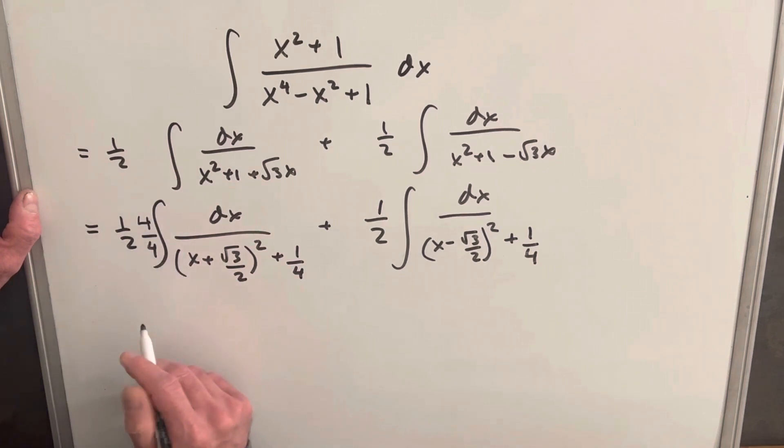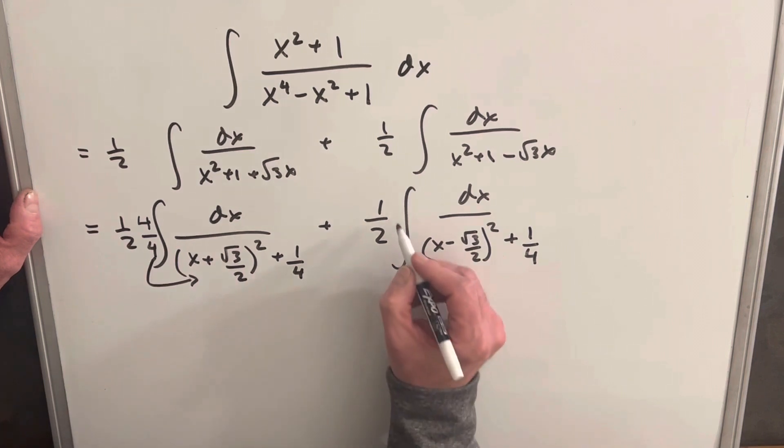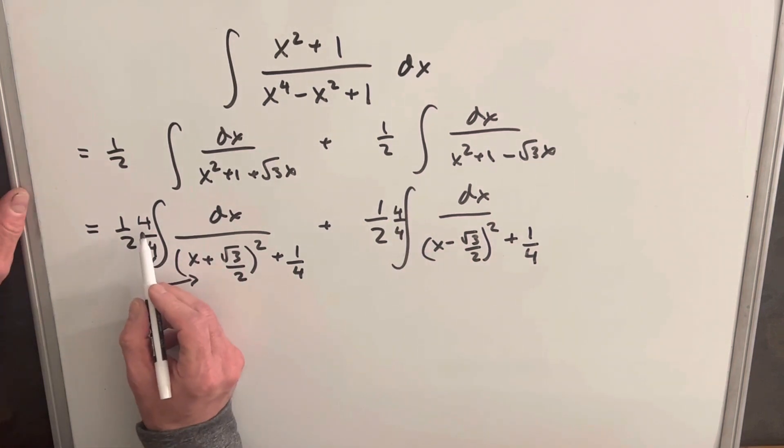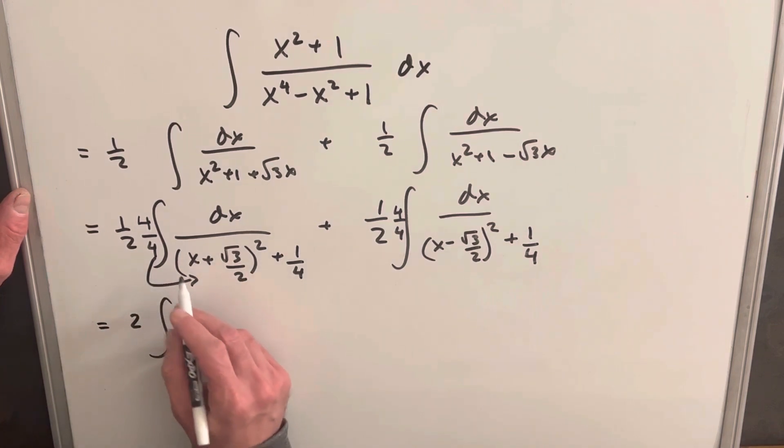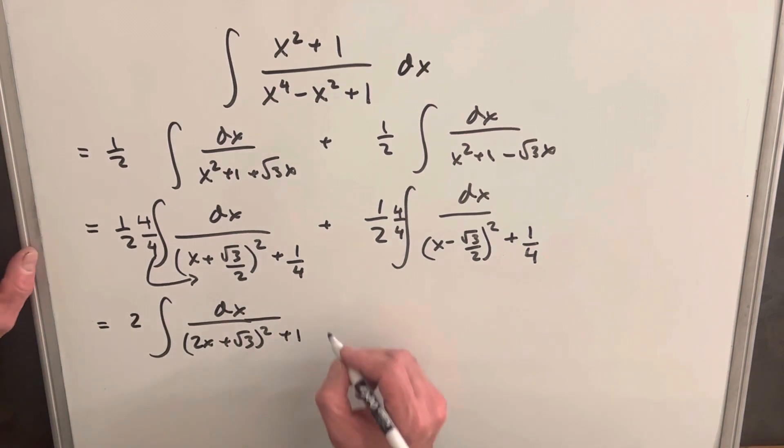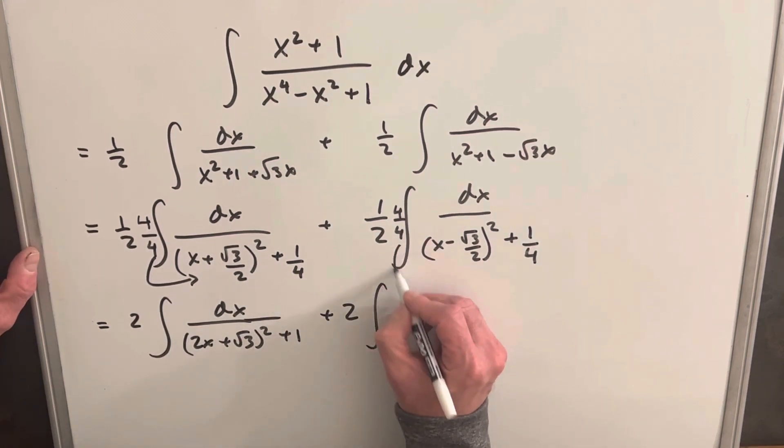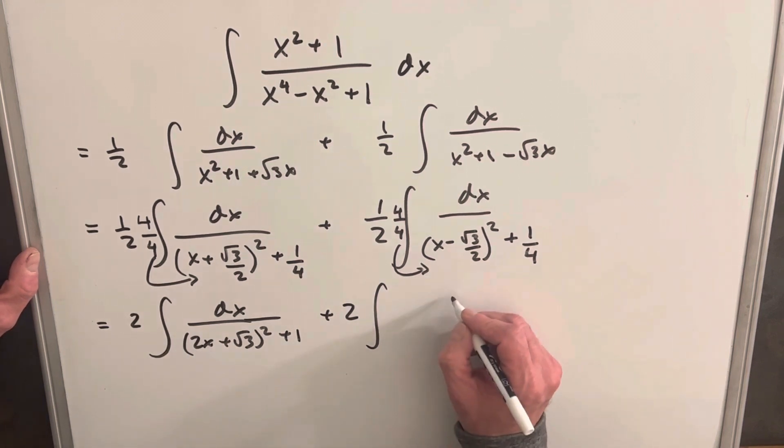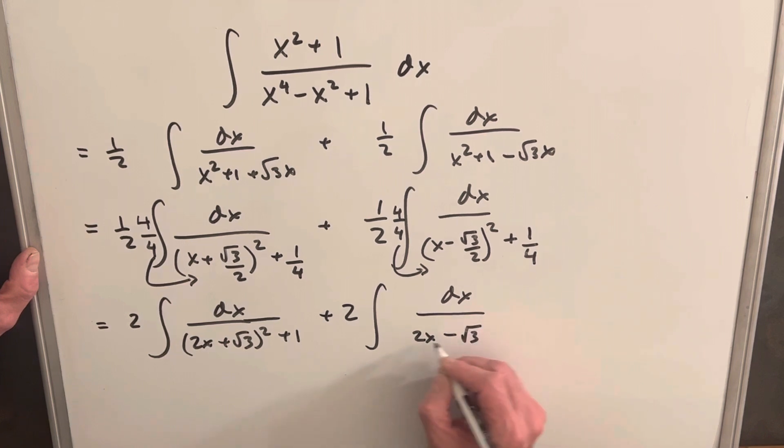Let's multiply by 4 over 4, because I'm going to take this 4 and multiply it in here, and we'll do the same thing here. Here, we're going to have 4 over 2, so we're going to start with a 2 out front. And then distributing this 4 in, when we distribute it inside of the square root, we're going to end up with 2x here, and then it's going to be 2x plus square root of 3 squared, plus 1, multiplying 4 by 1 fourth. Okay, and then doing the exact same thing over here, we're going to have a 2 out front, distributing a 4 in. Inside the square root, it's just distributing a 2, because we're squaring it. So then we're going to have 2 times x is 2x, minus 2 times square root of 3 over 2 is just square root of 3 squared, and then 4 times 1 fourth is plus 1.